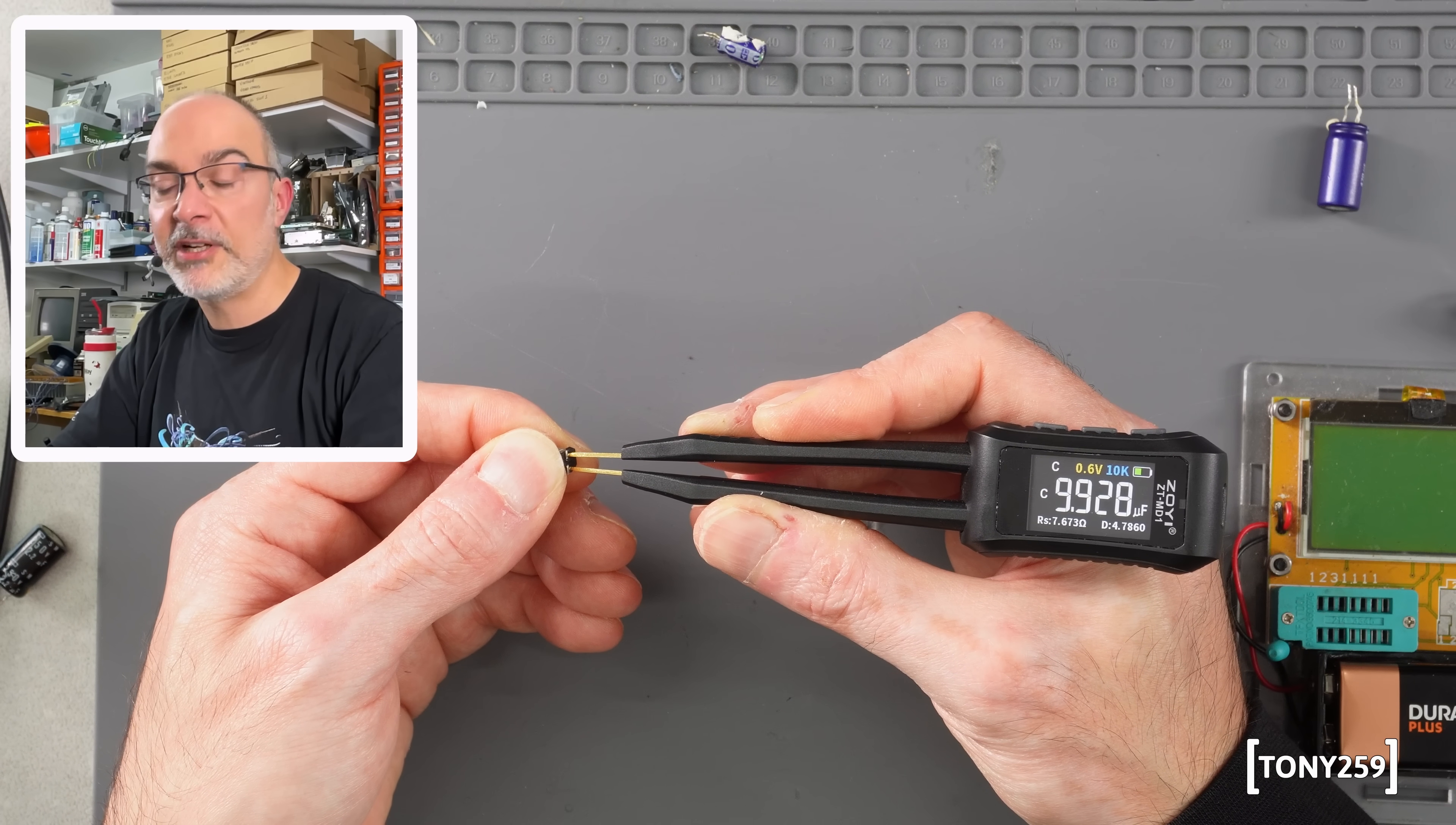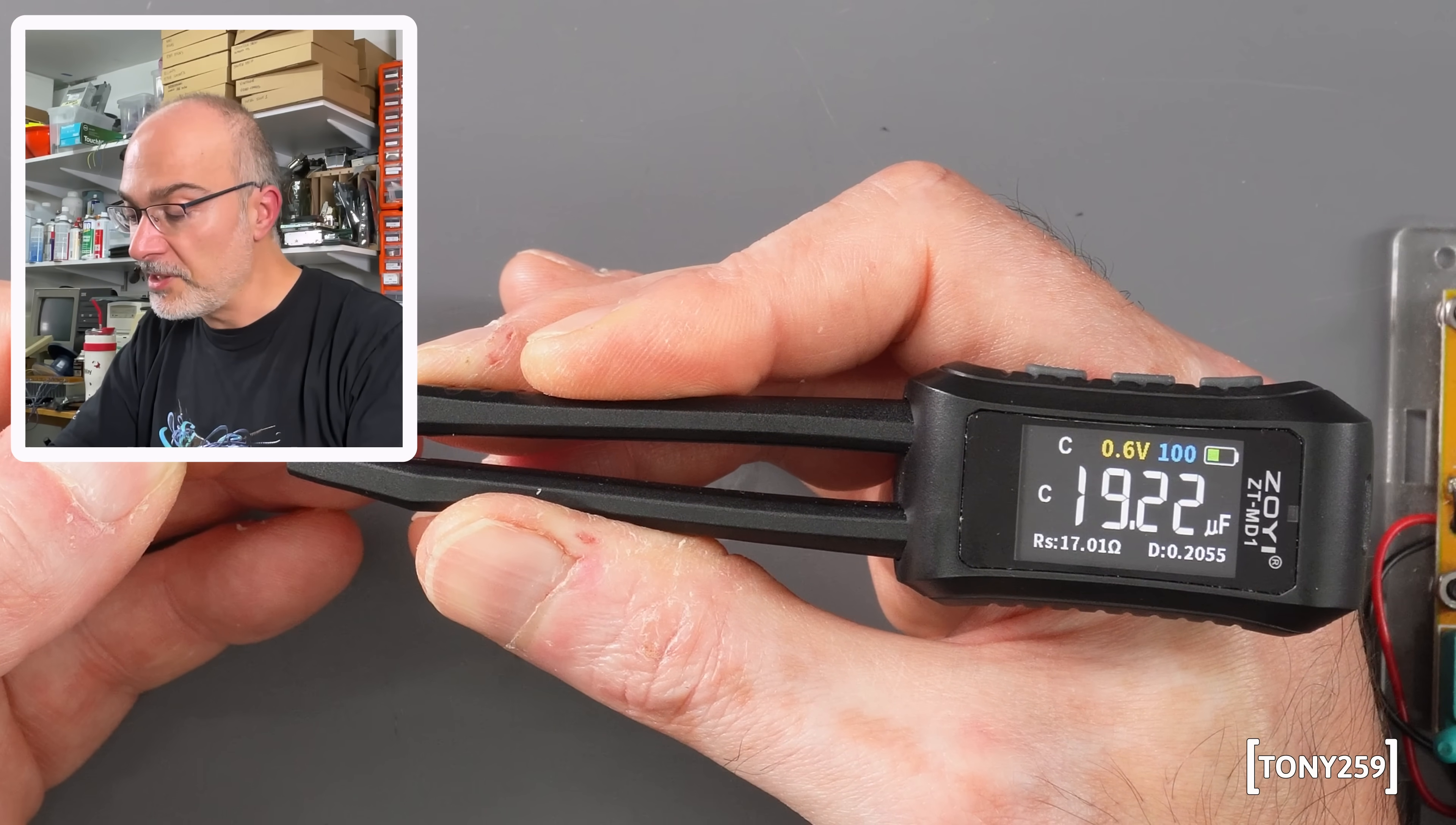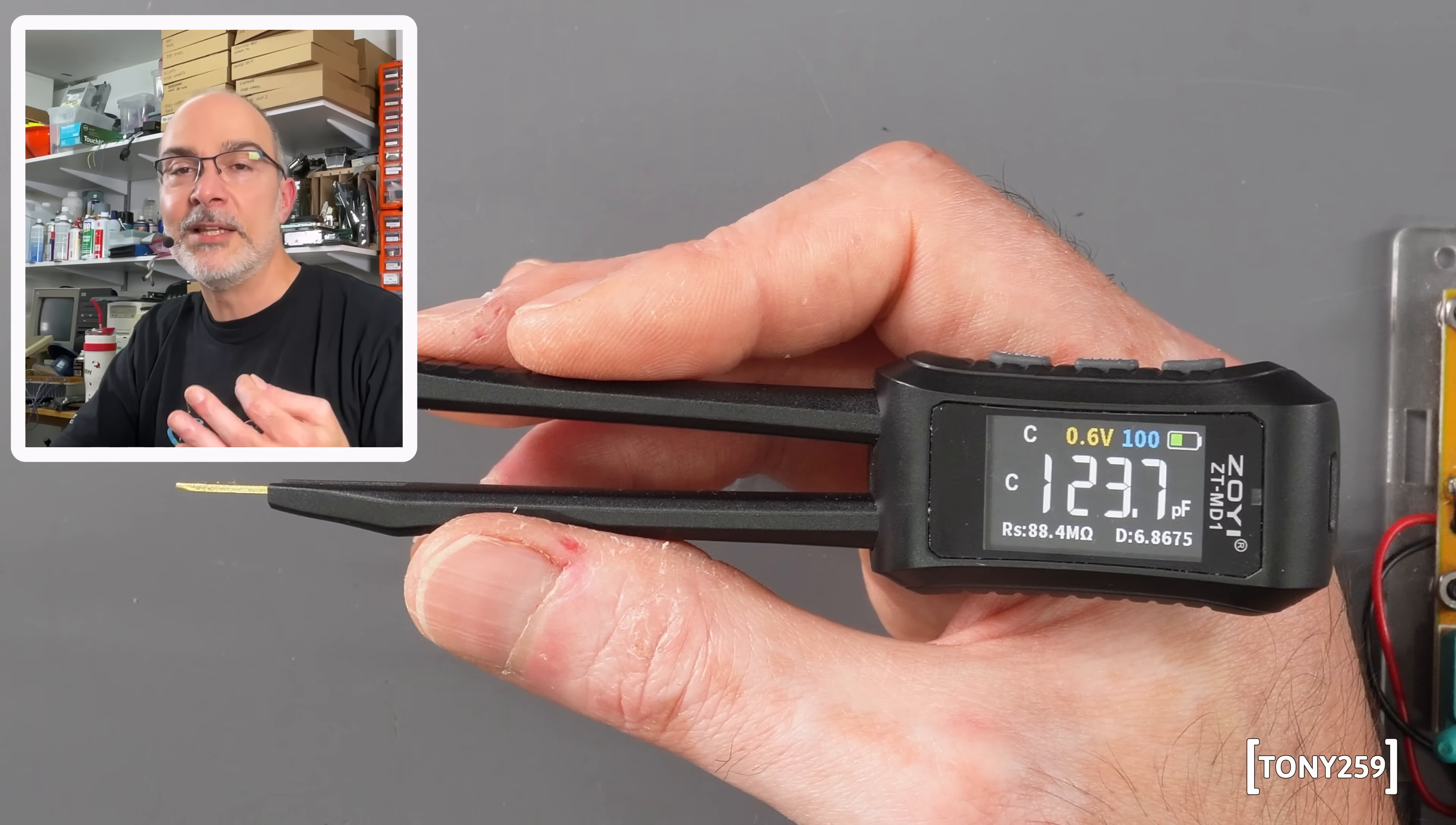This is a 22 microfarad capacitor, it's only reading 10 microfarad at 10 kilohertz, and an ESR of 7.5, which is probably a bit too high for a 22 microfarad. If I'm switching to 100 hertz, which is where the ESR is supposed to be a bit higher, and where a bad capacitor would read really bad, you can see that the capacitors is now 19, which is not too bad, but the ESR is 17 ohms for a 22 is way too high. I really like that now I have a tool that gives me this kind of layer of information, which I didn't have before, for a reasonable amount of money, because again, $30 online.